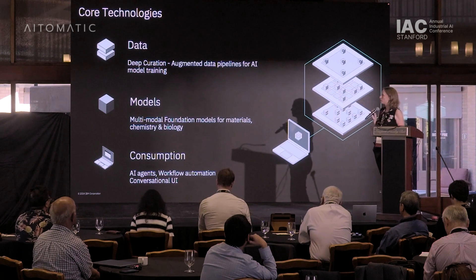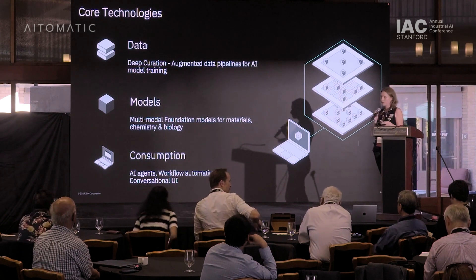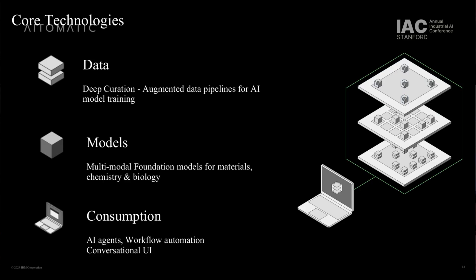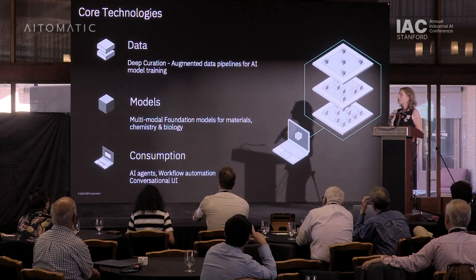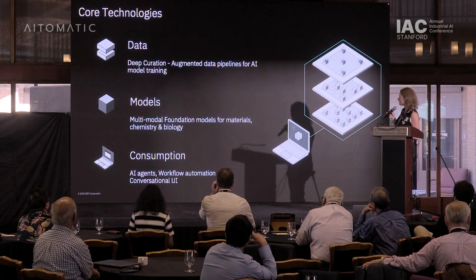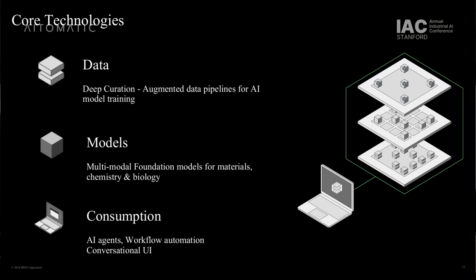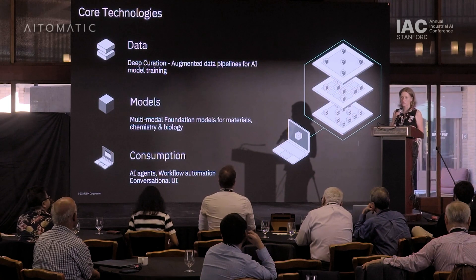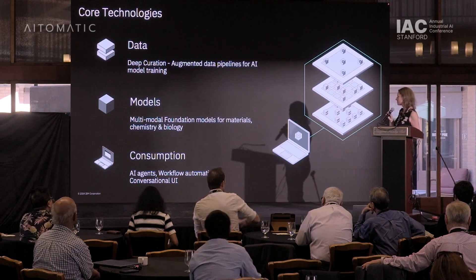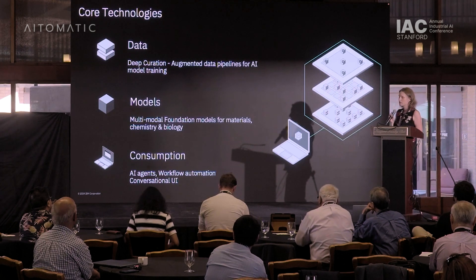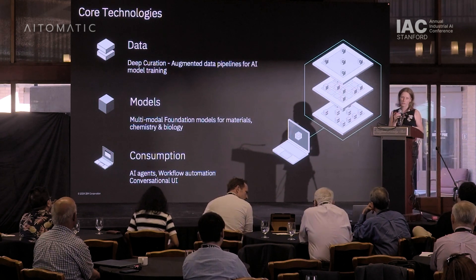Now I'll go into more detail on what we do for chemistry and materials. At IBM Research we call this 'Accelerate Discovery' — we take the best from AI and quantum, put this on the hybrid cloud, and try to build systems to accelerate discovery in the areas of sustainable materials, climate and sustainability (that's where the geospatial models came from), and life sciences — more in the pharmaceutical drug discovery space.